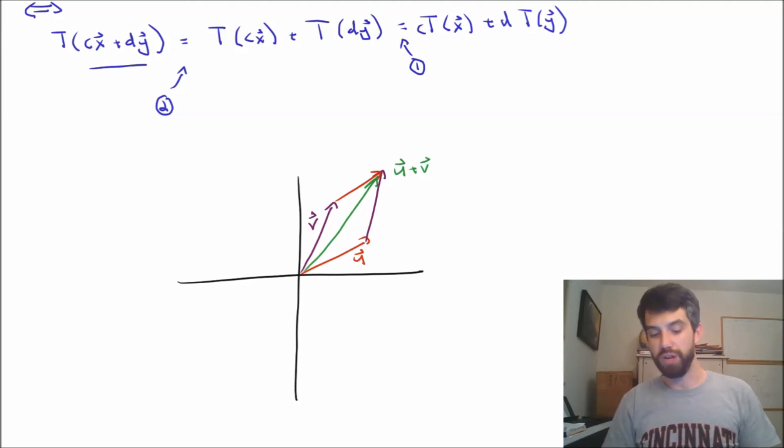So now what I want to do is I want to imagine that I can transform this particular vector, or any vector on the plane, by some linear transformation. Now, I'm going to imagine that my transformation is going to be rotation, and it's going to turn out that rotation actually is a linear transformation, which is a little bit interesting. It's going to play nice with vector addition.